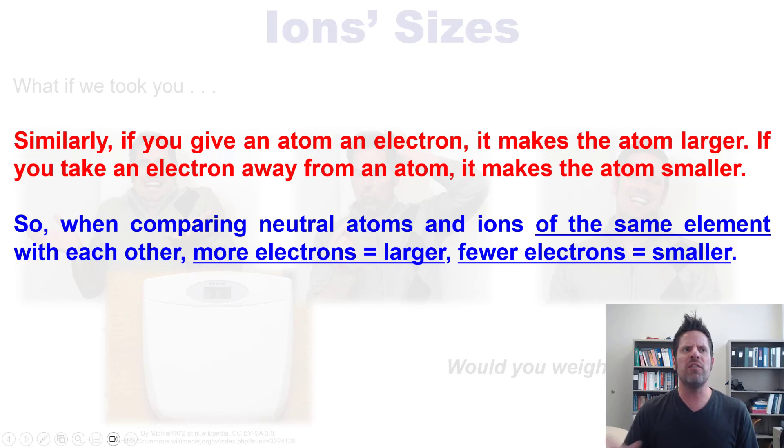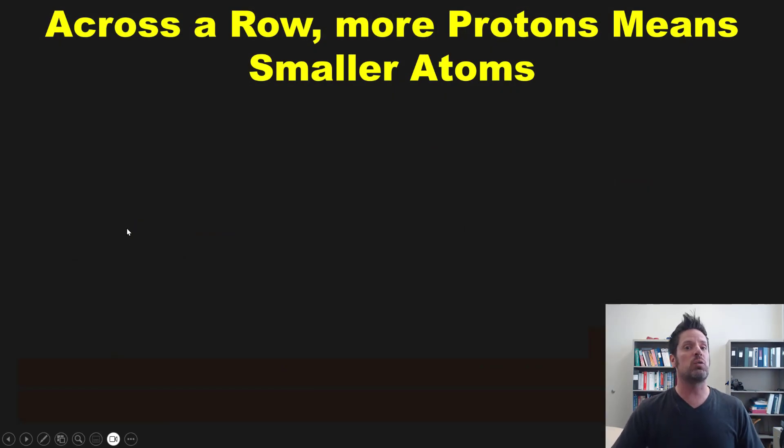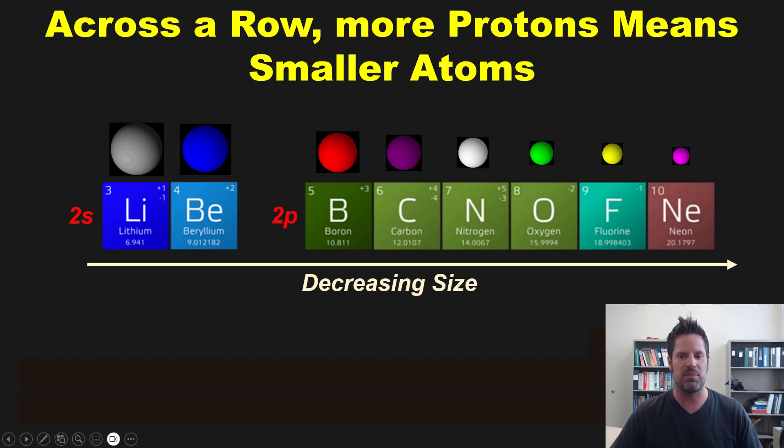Now at this point you might wonder, okay what if we're comparing atoms of different elements with each other? What do we do there? Well, as you might remember in our previous video, again linked in the description below or floating as a link over my head, as you go across a row, more protons equals smaller atoms. And we also explained why in that previous video.